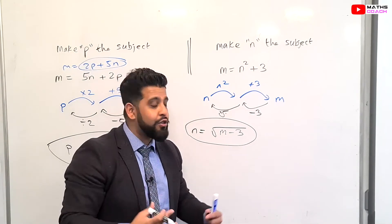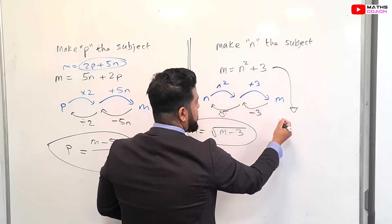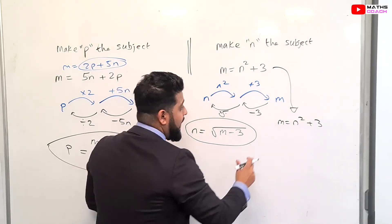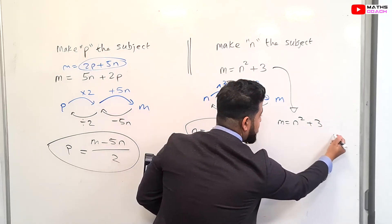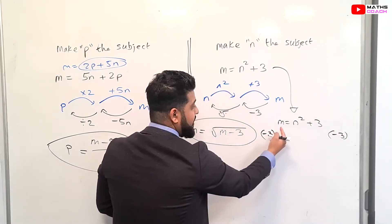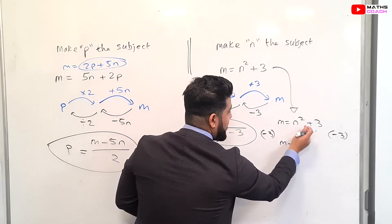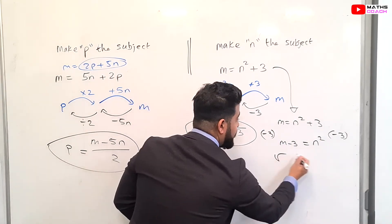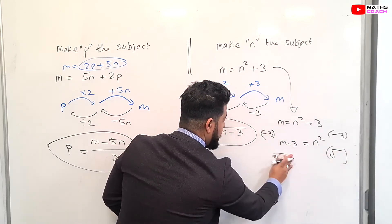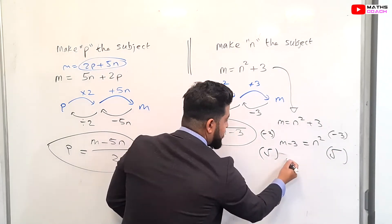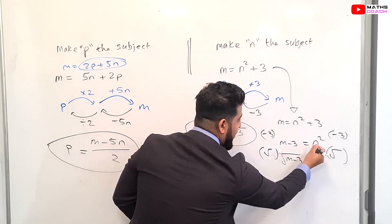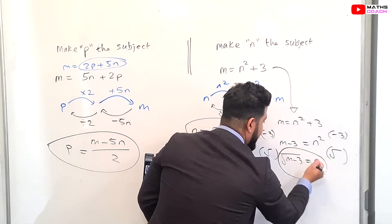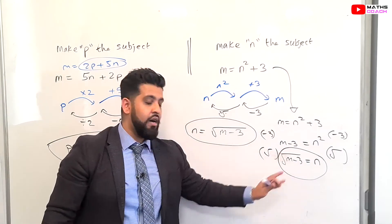Using the conventional method for M = N² + 3: subtract 3 from both sides to get M − 3 = N². Then square root both sides — the square and the square root cancel each other out — leaving N = √(M − 3). Both methods give the same answer. N is now the subject.